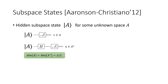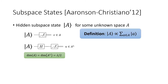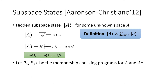Before introducing coset states, we explain the subspace states by Aaronson and Christiano. A subspace state for subspace A is a quantum state satisfying the following properties. If you measure the state directly in the computational basis, you get a uniformly random vector in subspace A. If you apply the Hadamard operator on the state and then measure, you get a uniformly random vector in the dual space A-perp. Here both A and A-perp have dimension roughly lambda over 2. The subspace state for subspace A is an equal superposition of all vectors in A.